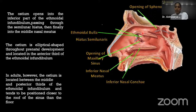The ostium opens into the inferior part of the ethmoidal infundibulum, passes through the hiatus semilunaris, and then into the middle nasal meatus. The ostium is elliptical in shape throughout prenatal development and is located in the anterior third of the ethmoidal infundibulum. In adults, however, the ostium is located between the middle and posterior third of the ethmoidal infundibulum and tends to be positioned closer to the roof of the sinus than the floor.